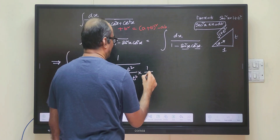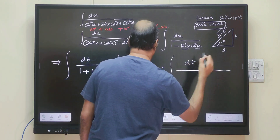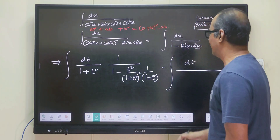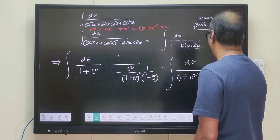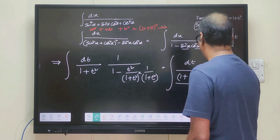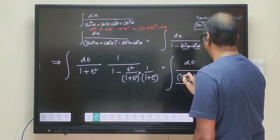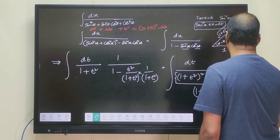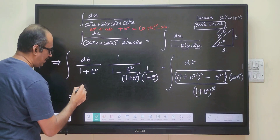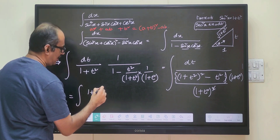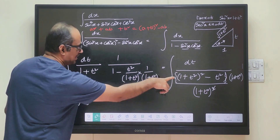Multiplying with cos square x, that is 1 divided by 1 plus t square, and simplifying: the integral becomes dt divided by 1 plus t square, with denominator 1 plus t square whole square minus t square divided by 1 plus t square whole square, multiplied by dt by 1 plus t square. One factor of 1 plus t square cancels, and finally we are left with the integral of 1 plus t square dt divided by t power 4 plus 2t square minus t square.